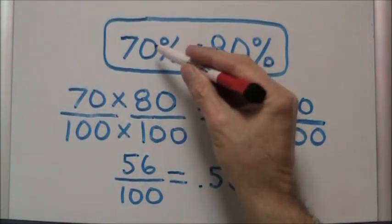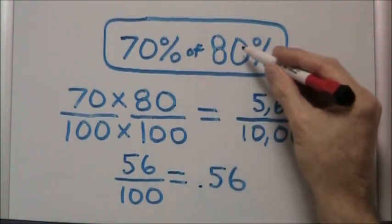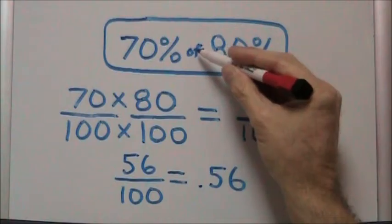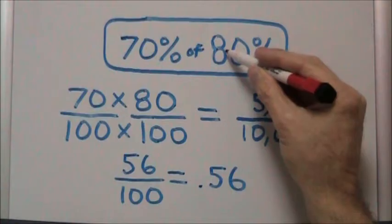In order to find one percent of another percent, such as 70% of 80%, the of is really multiplication. So we're going to be multiplying 70% by 80%.